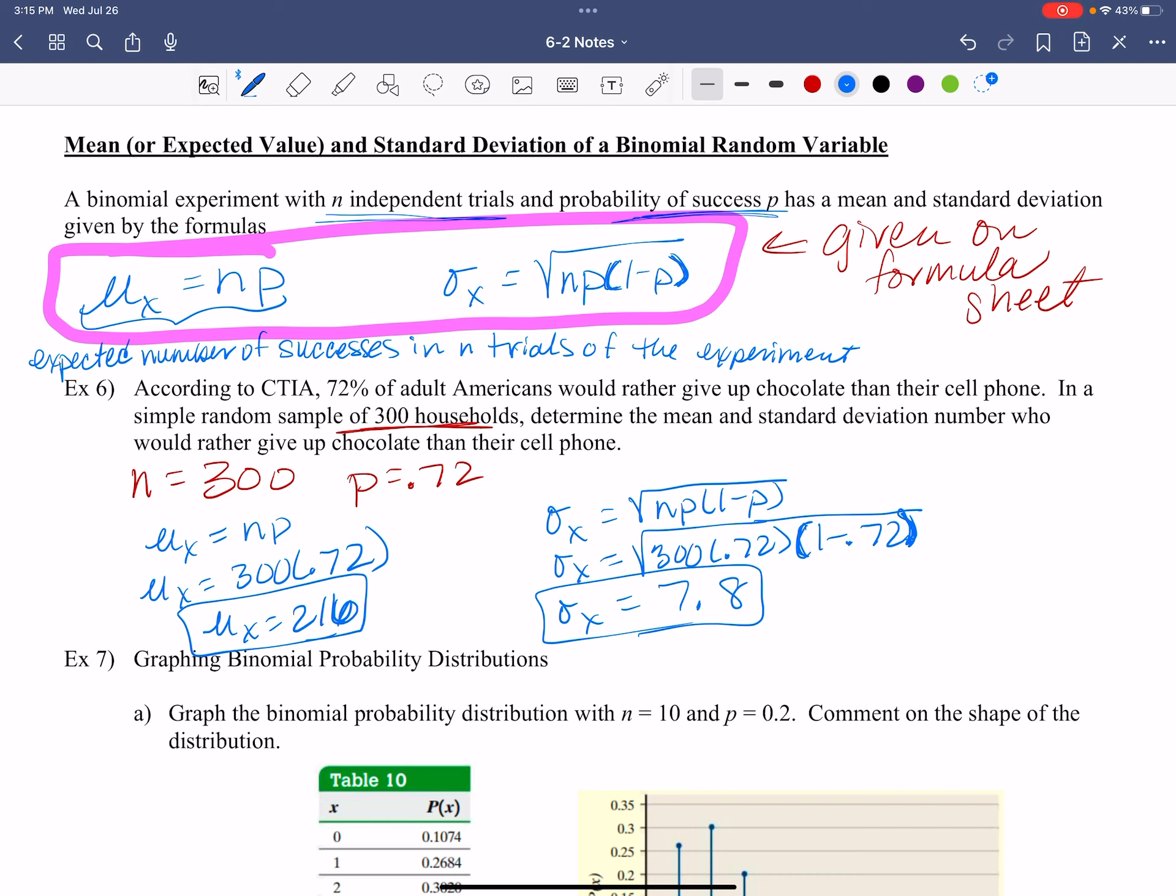So here is what we're looking at. Let's go purple. This means out of 300 households, we expect 216 to give up chocolate. I kind of ran out of room there, didn't I? Out of 300 households, we would expect 216 to give up chocolate versus their cell phone. Do you see that?